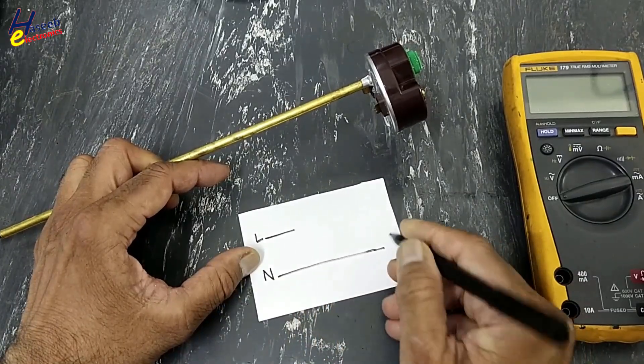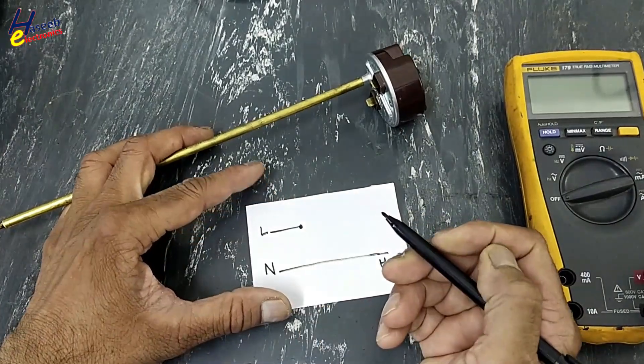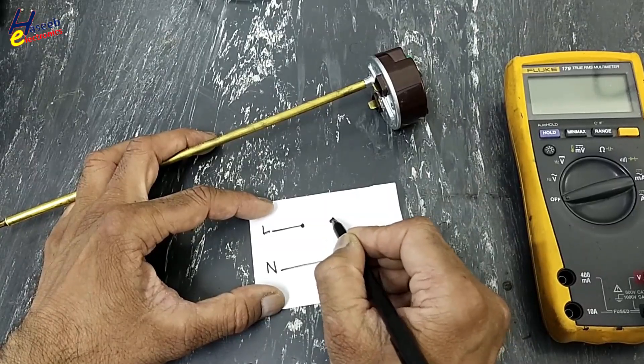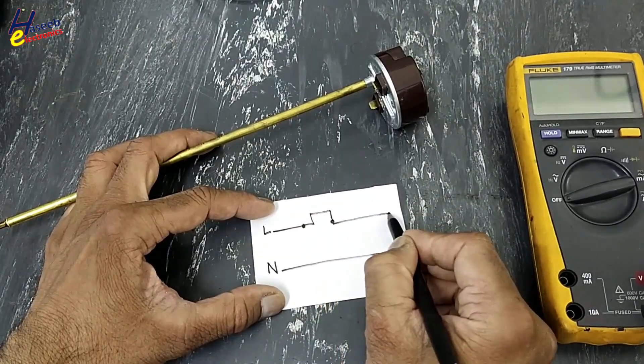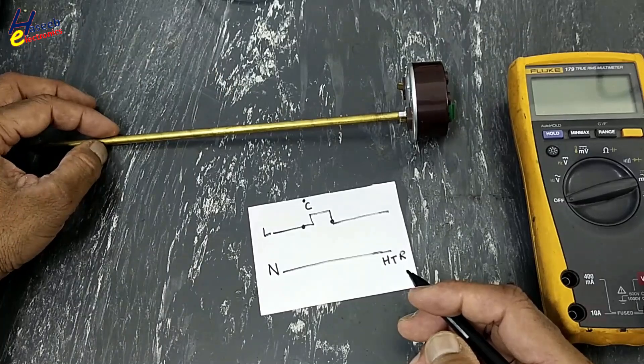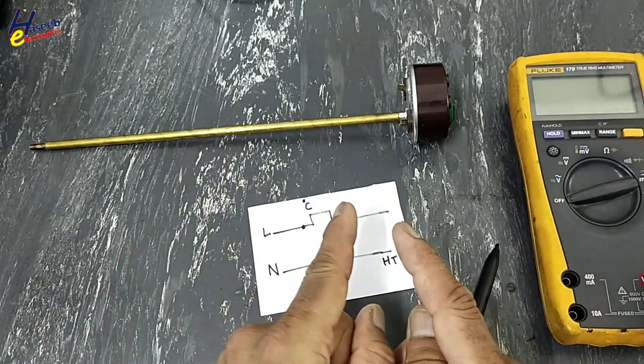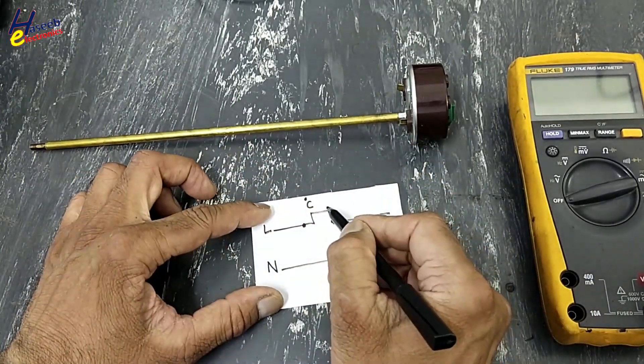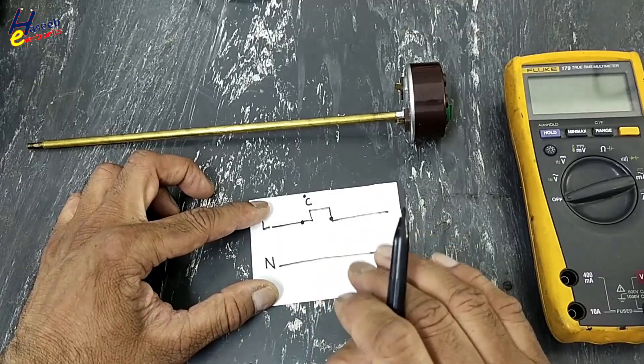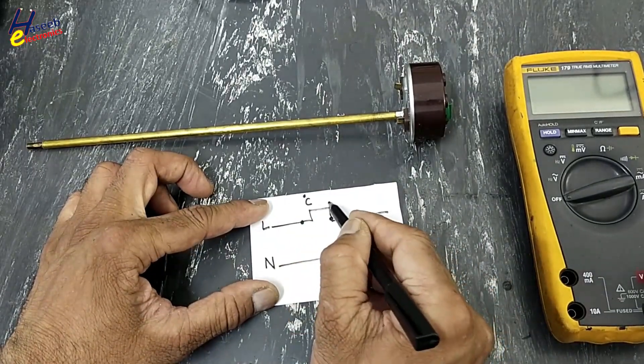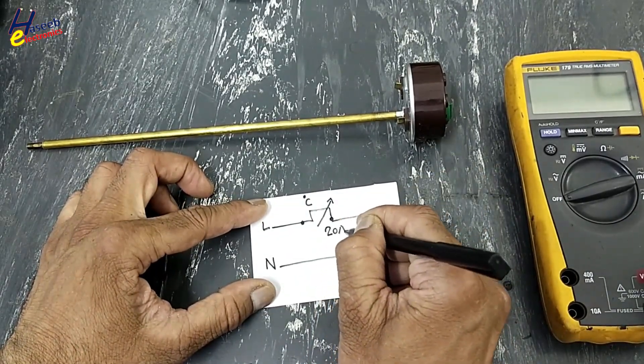But here in line terminal it is a gas-filled tube. When temperature will rise, its gas will expand and it will operate a metallic contact. So when temperature will rise it will open the circuit. If the temperature is below the specified limit it will remain on. It is adjustable. Contact rating: 20 ampere, 250 volt.